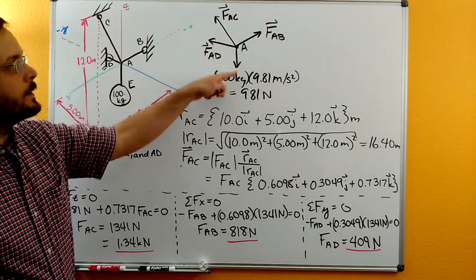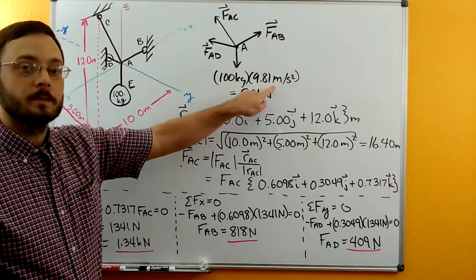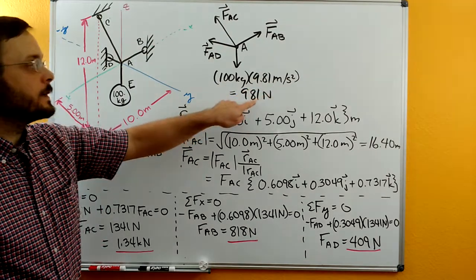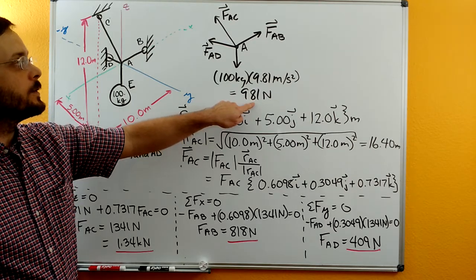We'll draw the weight that acts on point A. So that's our 100 kilogram mass times 9.81 meters per second, the acceleration due to gravity, to give us a 981 Newton force acting down on A.